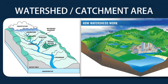A watershed is an area or ridge of land that separates waters flowing to different rivers, basins or seas. Catchment is the action of collecting water, especially the collection of rainfall over a natural drainage area. Two or more catchments form sub-watersheds. A group of sub-watersheds form a watershed, whereas a group of watersheds forms a basin.